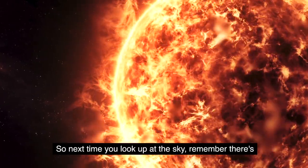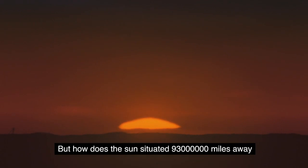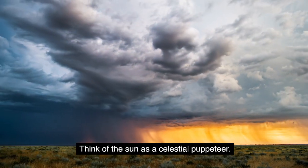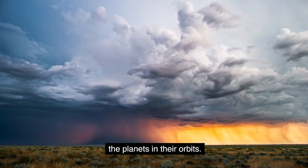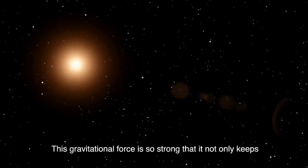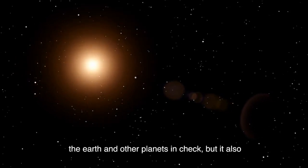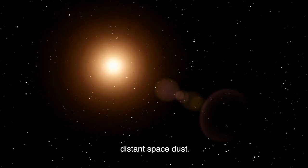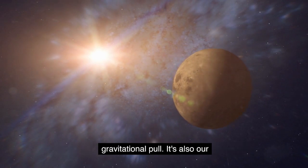So next time you look up at the sky, remember, there's more to the sun than meets the eye. But how does the sun, situated 93 million miles away, influence our daily lives and the larger solar system? Think of the sun as a celestial puppeteer. Its gravitational pull acting as invisible strings that hold the planets in their orbits. This gravitational force is so strong that it not only keeps the earth and other planets in check, but it also influences the movement of asteroids, comets and even distant space dust. The sun's influence however extends beyond its gravitational pull.